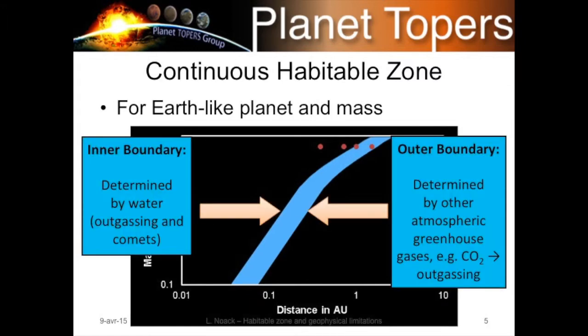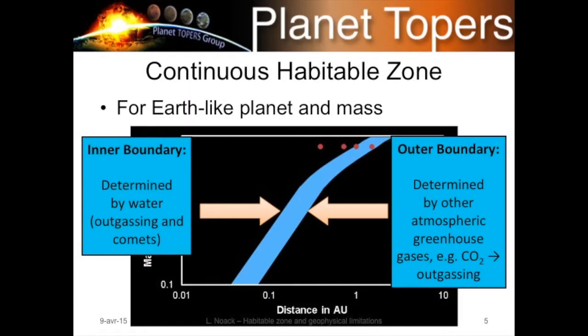The inner boundary of the habitable zone is mainly determined by water, which comes from outgassing from the interior or delivery by comets. The outer boundary depends on other atmospheric greenhouse gases, like CO2. For terrestrial small super-Earth planets, it's rather CO2 we look at, and a very important factor is outgassing and the build-up of the secondary atmosphere over long timescales to achieve the maximum greenhouse effect at the outer boundary.